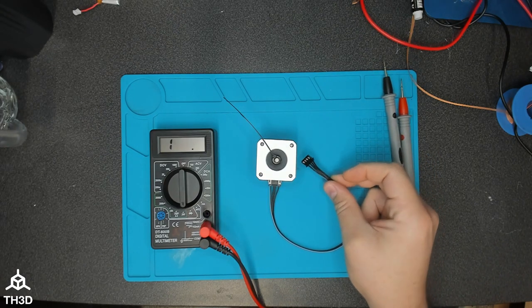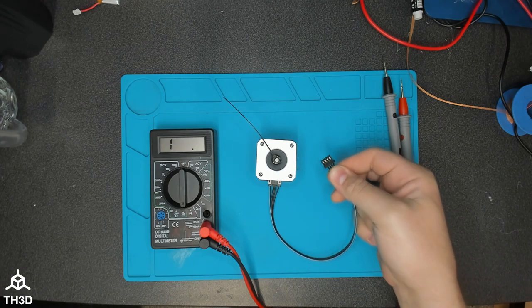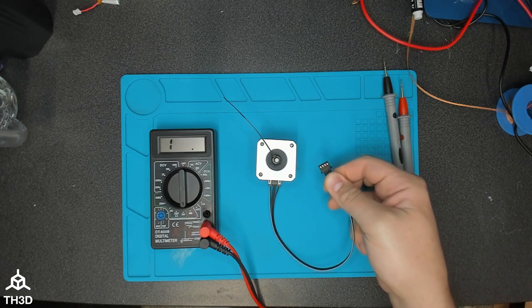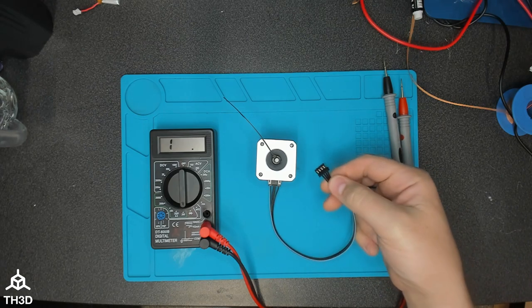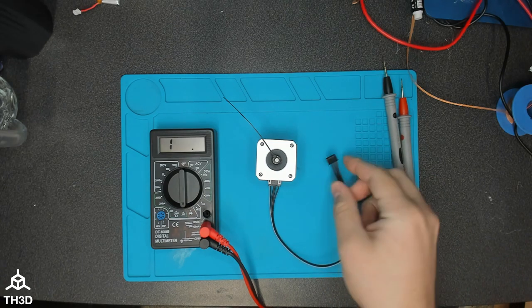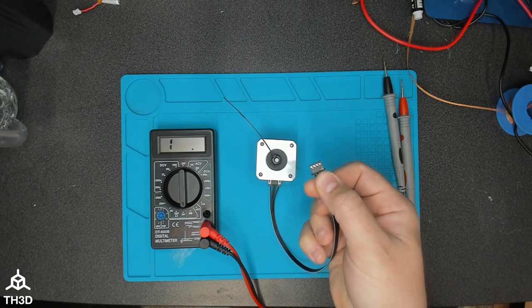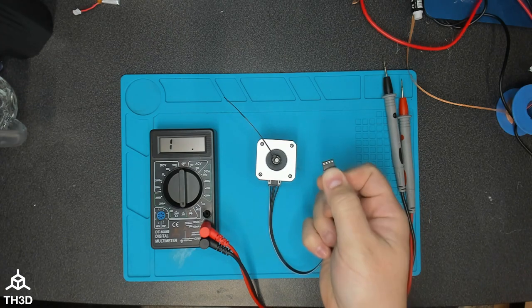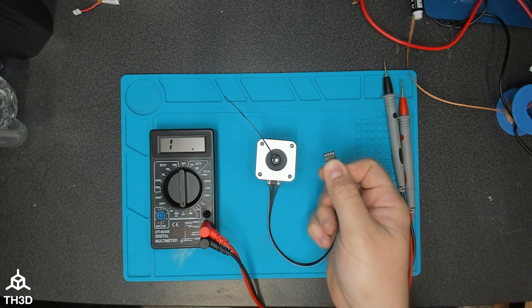You can see here I have the stepper motor cable, and this is the end that goes to the motherboard of your printer or control board. This is where this plugs into, your main board in the printer. On this connector you can see here we have four pins that go to the plug. These pins go to the coils on your motor.